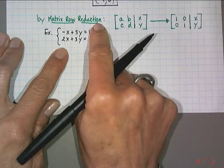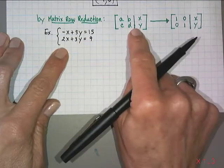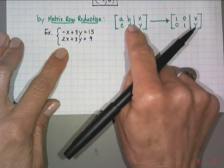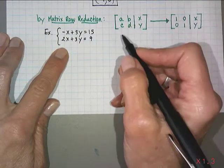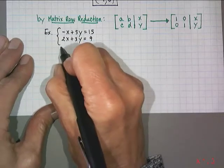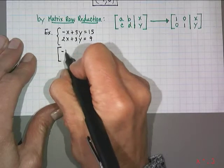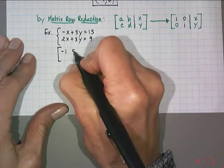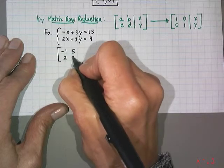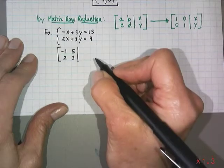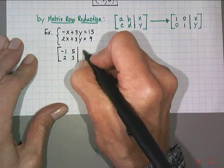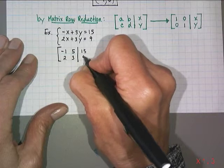What I first have to do is change my system into this format. So what would it look like? It would look like this: negative 1, just the coefficients, 5, 2, and 3. Draw a bar, then not x and y, we're going to put 15 and 9. These are my constants in the system.